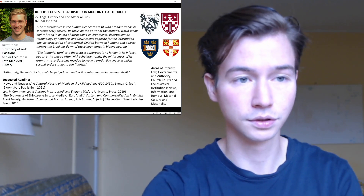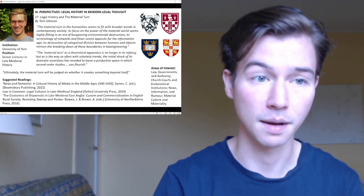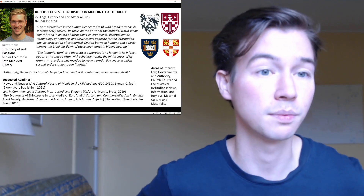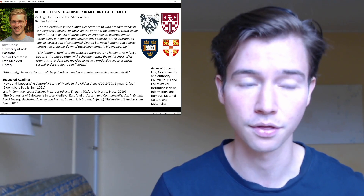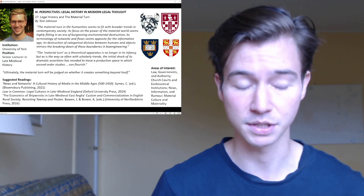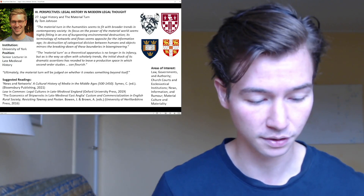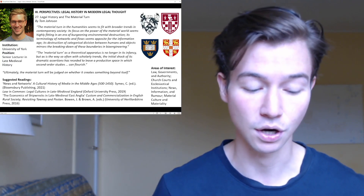Tom Johnson's chapter is in part three of the Oxford Handbook of Legal History, Perspectives: Legal History in Modern Legal Thought. His chapter is chapter 27, 'Legal History and the Material Turn.' As for his brief biography, he is a senior lecturer of history at the University of York, focusing on late medieval history.